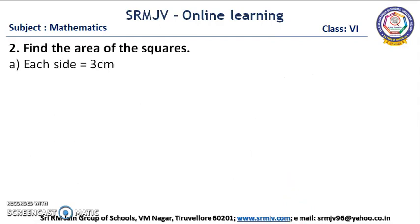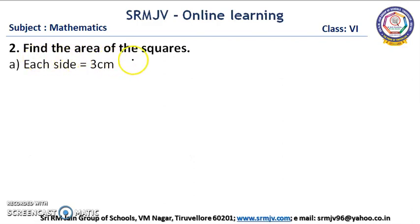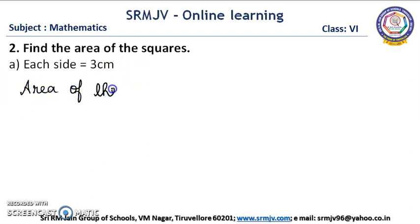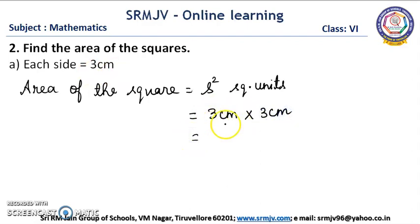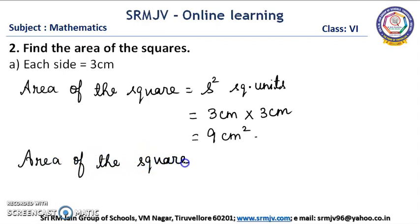Is it clear children? Shall we go to the next one? The next question is: find the area of the squares. The first one: each side is equal to 3 cm. First we write the formula: area of the square is equal to side squared square units, that is side into side. Side is 3 cm into 3 cm. 3 threes are 9, cm into cm is cm square. So area of the square is equal to 9 cm square.